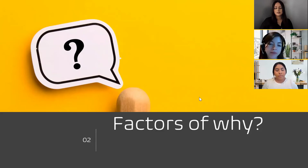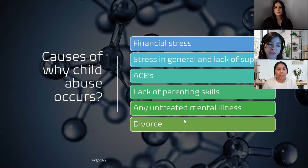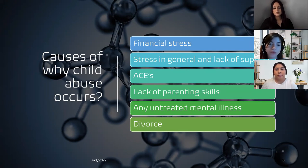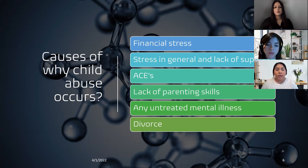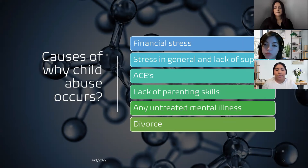Factors of why. In the following slide, we're going to talk about the factors that lead to child abuse. Keep in mind that all of these are preventable. Causes include financial stress, stress in general and lack of support, ACEs, lack of parenting skills, untreated mental illnesses, and divorce. ACEs — adverse childhood experiences — are any traumatic events that occurred in childhood, between birth and 17 years of age, including violence, abuse, neglect, witnessing violence in the home or community, or having a suicidal family member in the household.